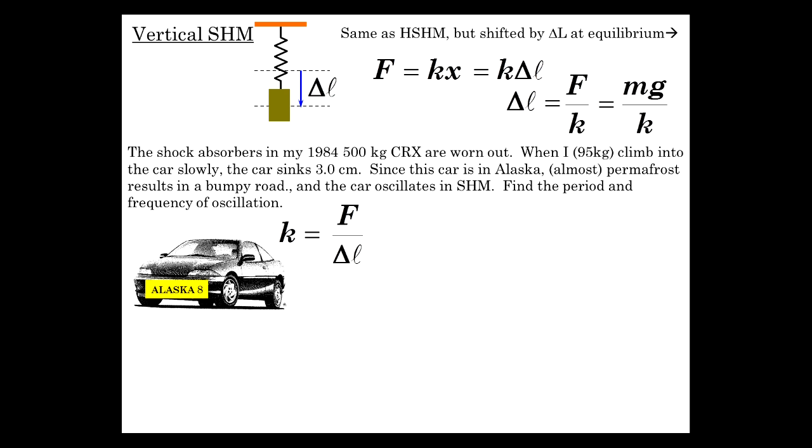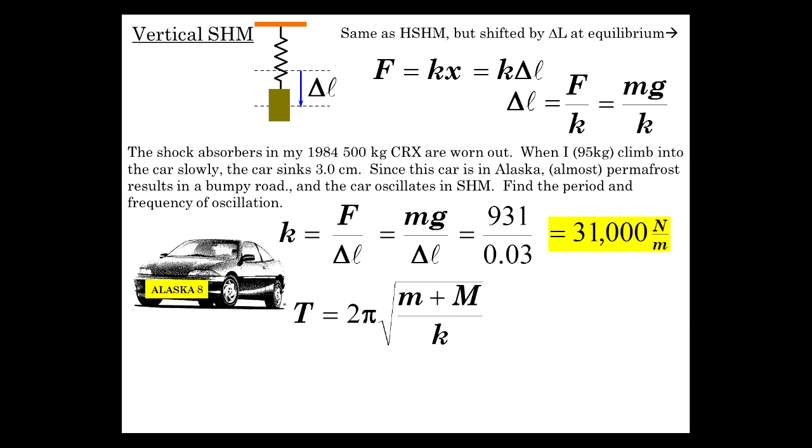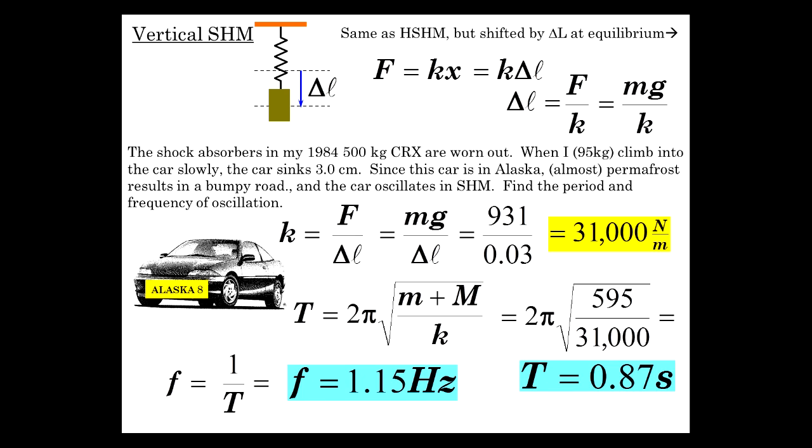Well, let's solve this problem for k, which is F over delta L. And the force, as the problem says, I'm going to climb in it and it sinks 3 centimeters. So mg over delta L, 95 times 9.8, 931 over 0.03 is 31,000 newtons per meter. So the period is 2 pi square root of m over k and that's 2 pi square root of 595, the total mass, over the just discovered spring constant, 31,000, is 0.87 seconds. So a period of 0.87 seconds. That's fairly realistic, actually. Then the frequency is just 1 over period, which is 1.15 hertz. Boing, boing, boing, going down the road with shock absorbers that are shot. The shock absorbers should basically stop the oscillation. We'll get into that a little later.